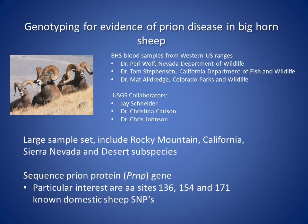This was possible due to a great network of collaborators including Dr. Perry Wolf, Dr. Tom Stevenson, Dr. Matt Aldridge, and USGS collaborators Dr. Christina Carlson, Jay Snyder, and Dr. Chris Johnson. We collected whole blood samples from individual bighorn sheep during research or management activities, including Rocky Mountain, California, Sierra Nevada, and desert subspecies. We sequenced the prion protein gene and were particularly interested in amino acid sites 136, 154, and 171, which have polymorphisms in domestic sheep affecting susceptibility to scrapie.